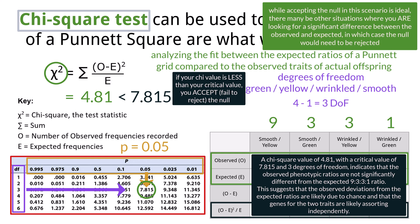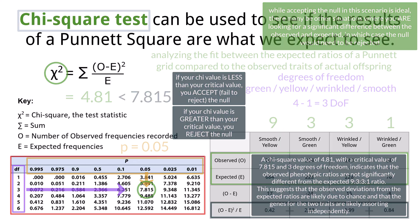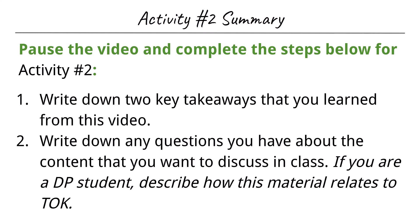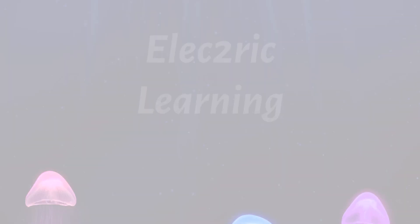To review, if your calculated chi is less than the critical value, you do not reject the null. Any difference from the expected values are probably due to chance alone. But if your calculated chi is greater than the critical value, you reject the null. Differences from the expected values are due to some other factor other than chance.